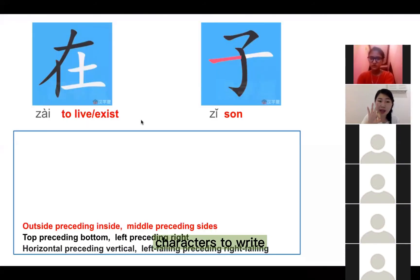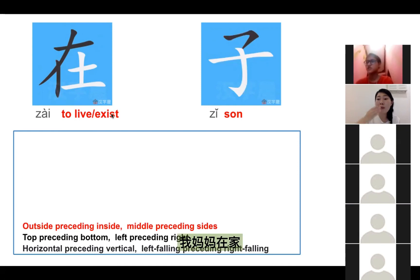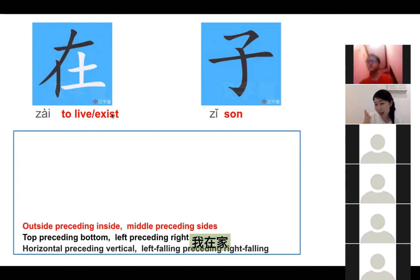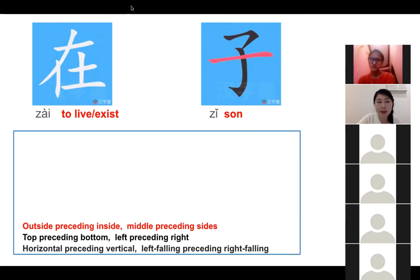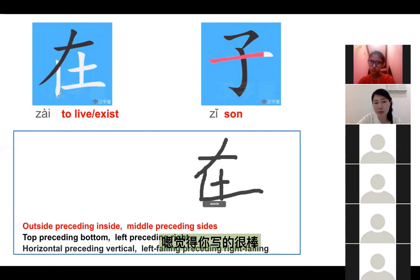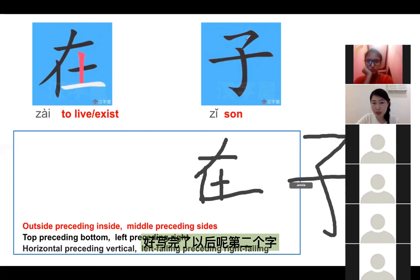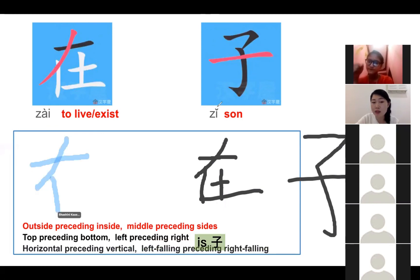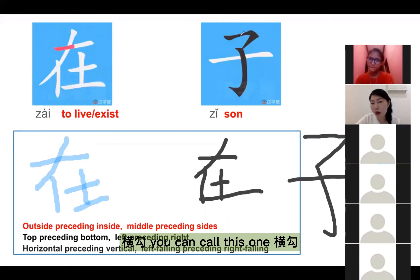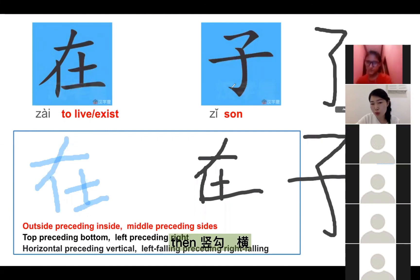Today we have three characters to write. The first one is 在 — 在 means to be in, on or at, like 我妈妈在家, 她的儿子在医院, 我在家。现在我们可以写一写「在」。Now we can write 在。